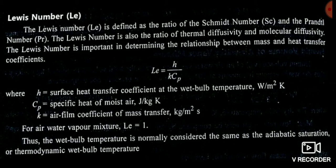Now let's look at the Lewis number. The Lewis number is the ratio of the Schmidt number to the Prandtl number. In simpler terms, it is the ratio of thermal diffusivity to molecular diffusivity, expressed as H/(K·Cp), where H is the convective heat transfer coefficient, K is the mass transfer coefficient, and Cp is the specific heat of moist air. For an air-water vapor mixture, the Lewis number is equal to 1.